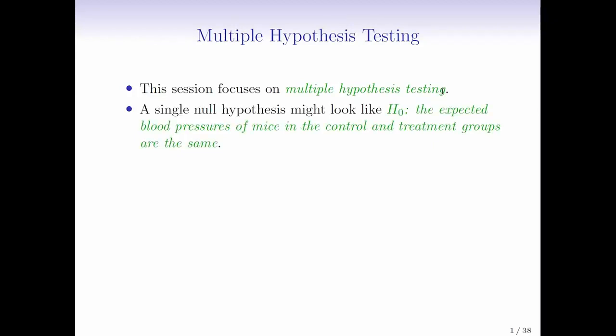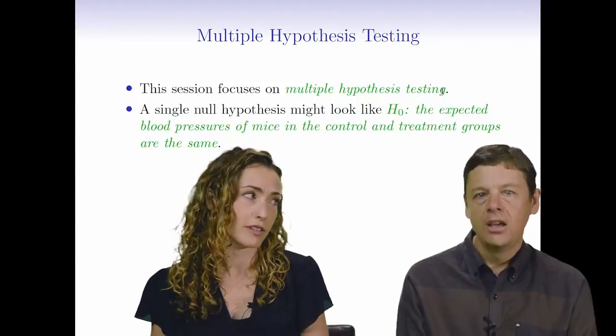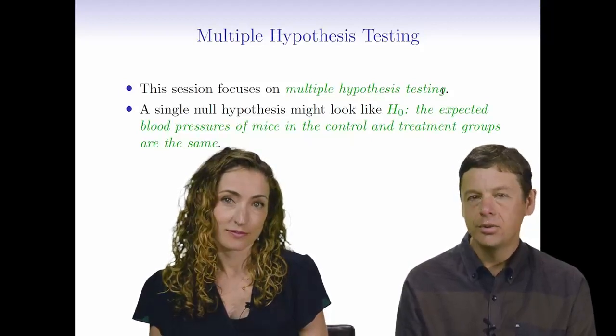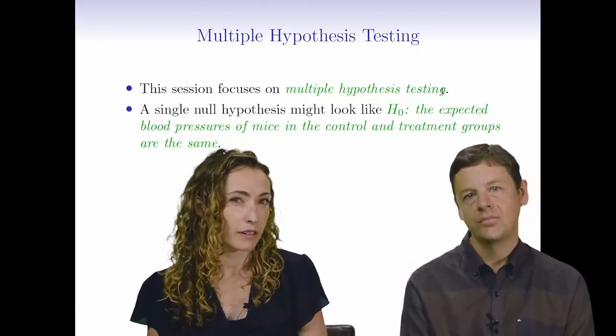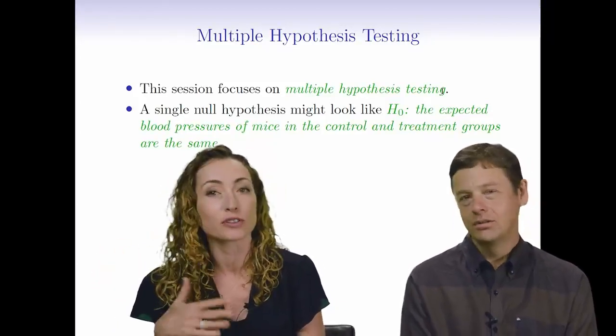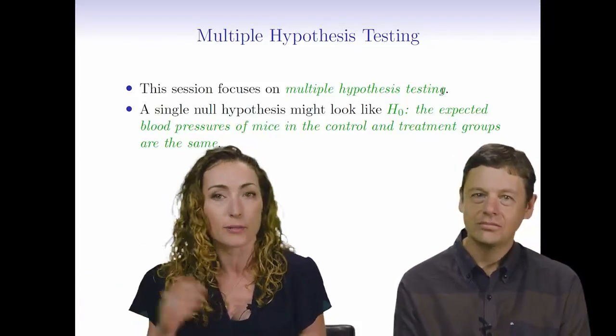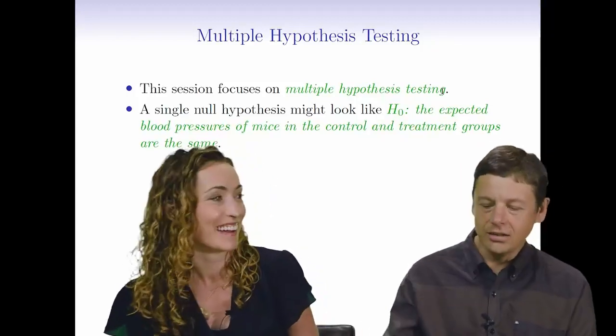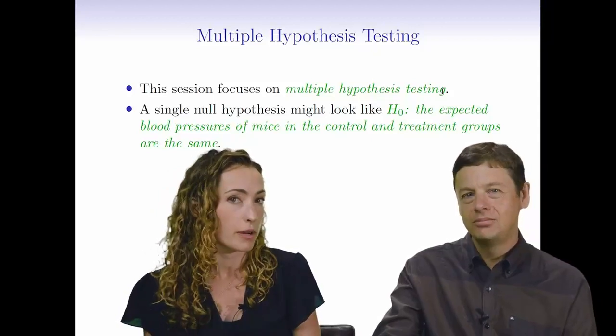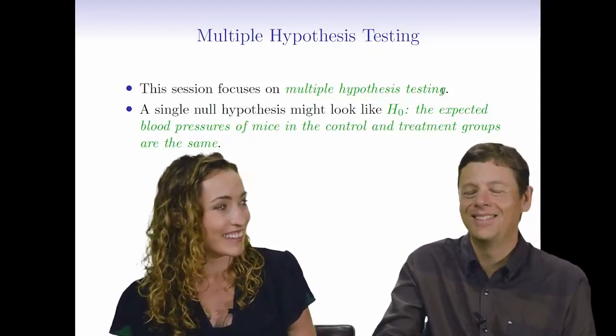So I'm sure most of you are familiar with the idea of a standard single hypothesis test where we might be trying to test a null hypothesis like the expected blood pressures of mice in the control and treatment groups are equal versus an alternative that they're not equal. And we know how to do that. So H sub zero, that represents the null hypothesis. And then we usually have an H sub one or an H sub a to represent the alternative hypothesis. This is in case you're wondering in the audience, we actually had an argument about this like two years ago. So this is just an opportunity for you to see that I'm right, at least if you have an American accent. I say H not. And Gareth says H zero.